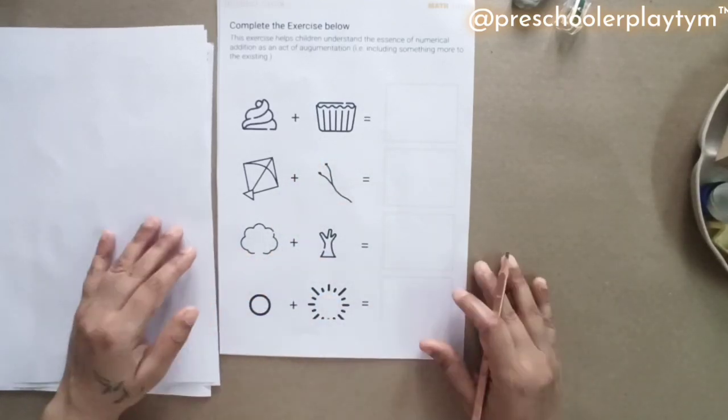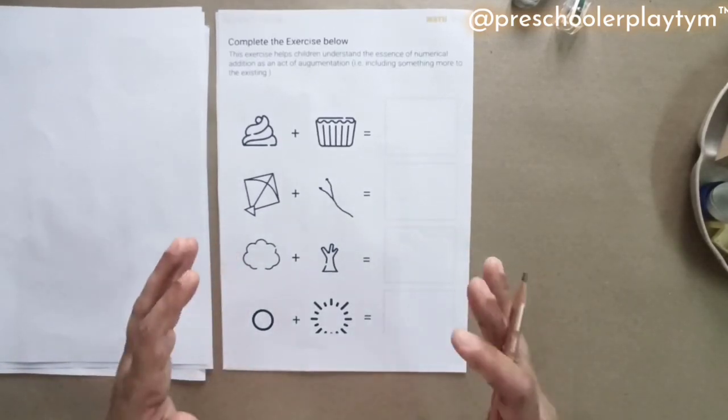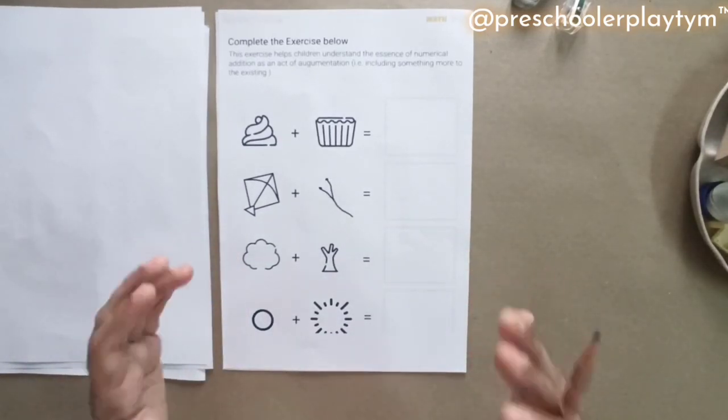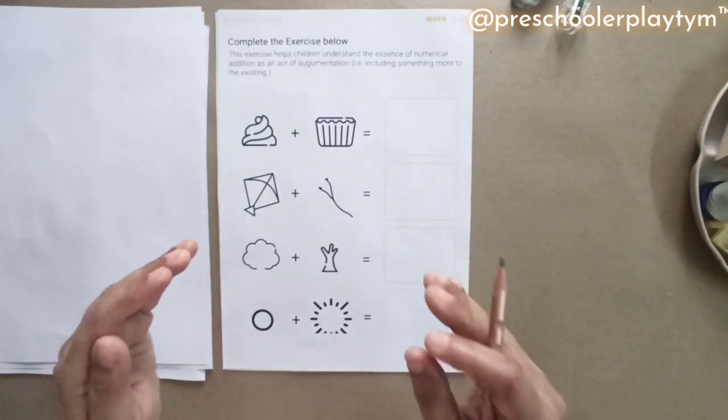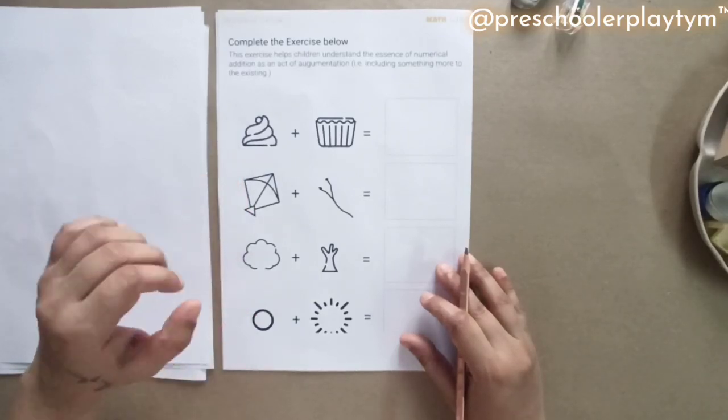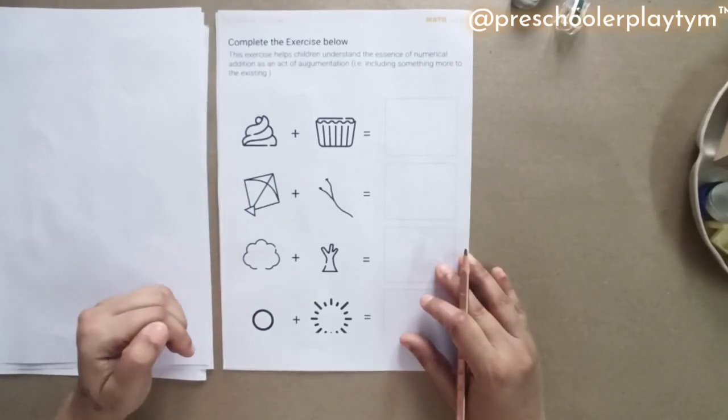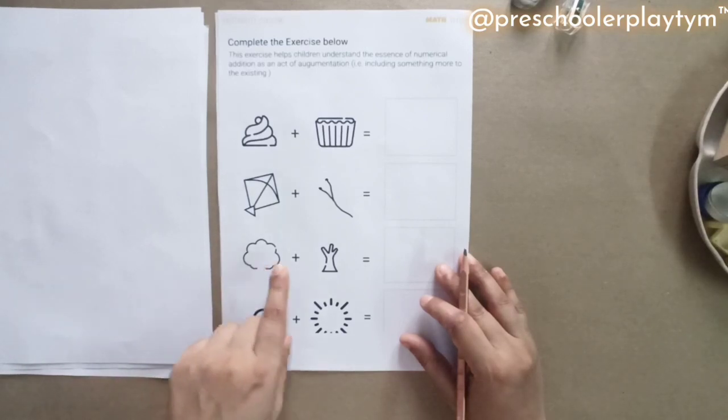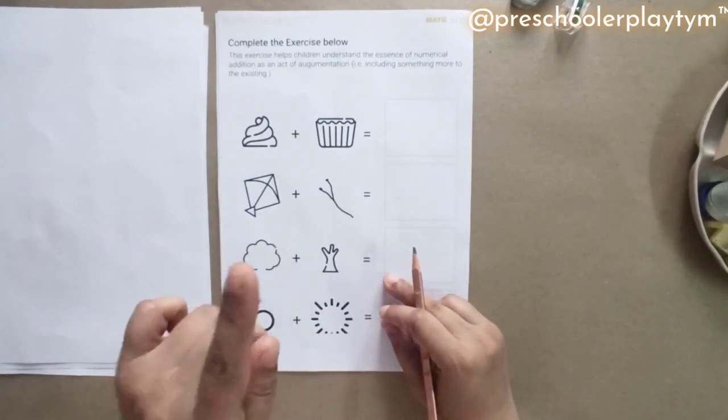So this is what we are trying to put here in a play way method where the kid is not taught math in a numeric manner, but is taught math in a manner where he or she can associate. And this is what I want them to do because here they can relate to. They know when they go out, they see a tree and they see a log, and they know how a tree looks. So they know they're supposed to add it.